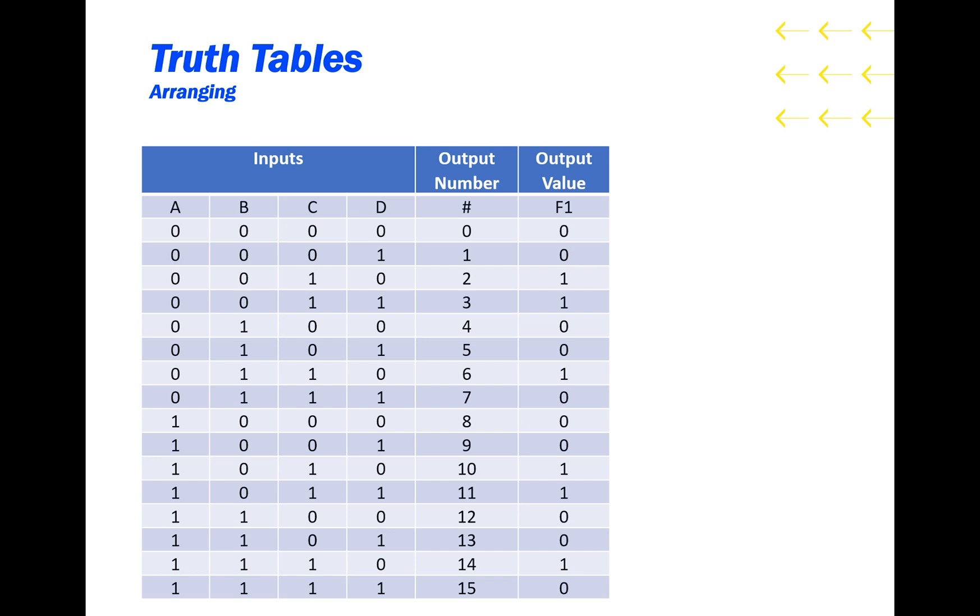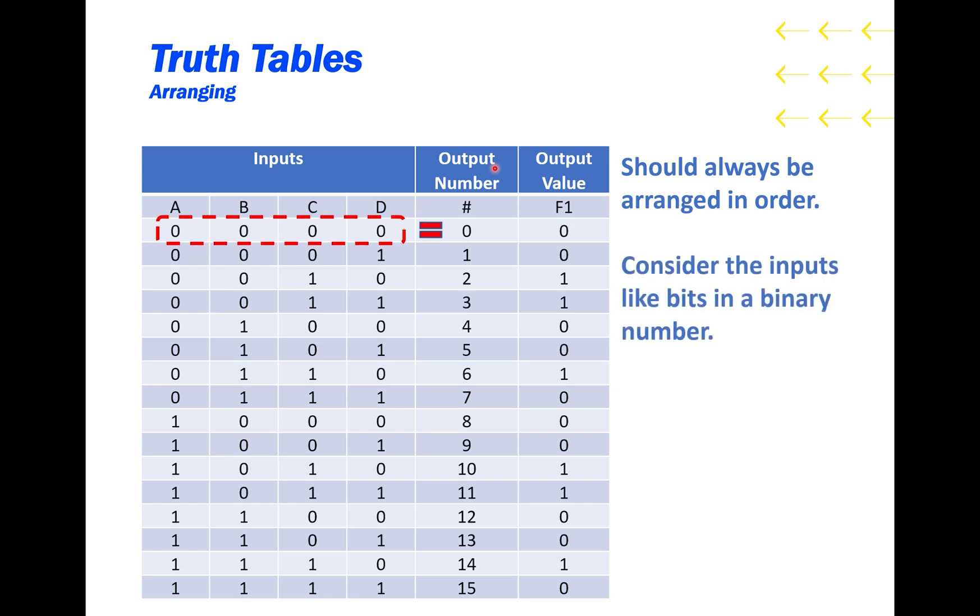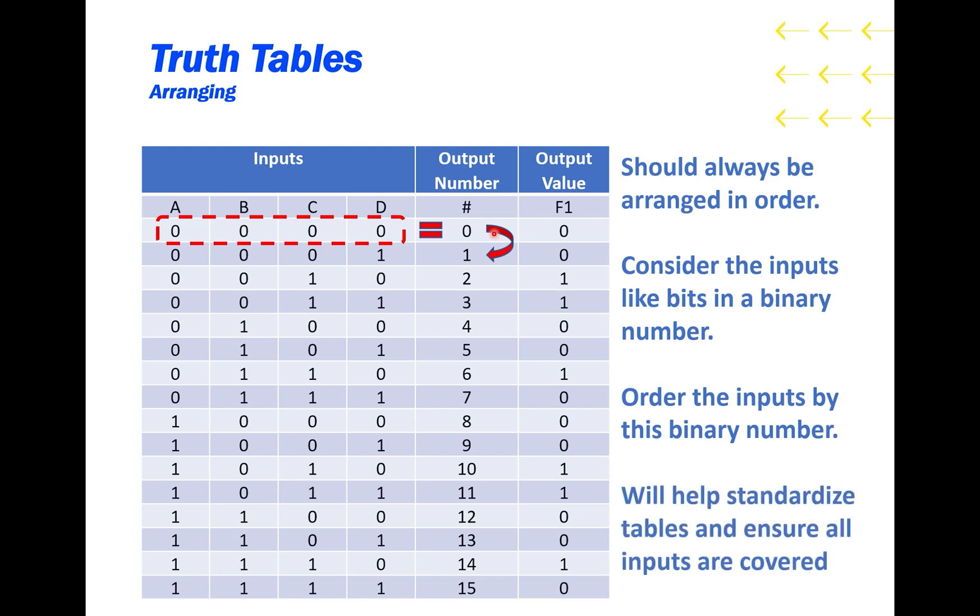I'm sure everyone's seen truth tables, but what you might not have seen is this middle column with the output number. A truth table should always be arranged in order. If you consider the input variables like bits in a binary number, you can get this output number. You can order the inputs by this binary number, and this will standardize the truth table and ensure that all inputs are covered.